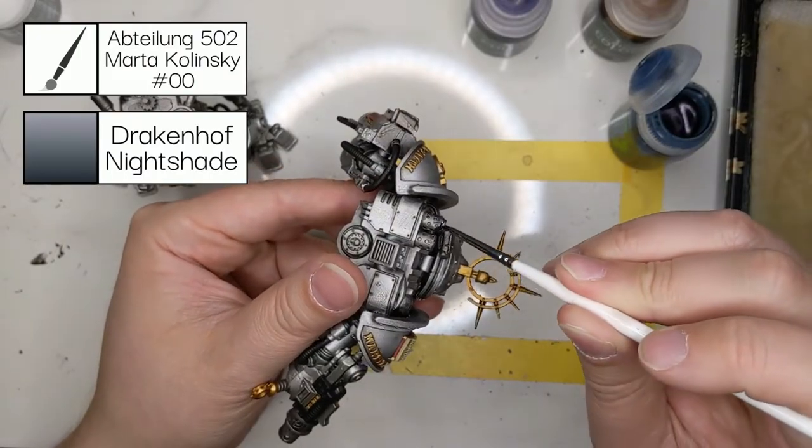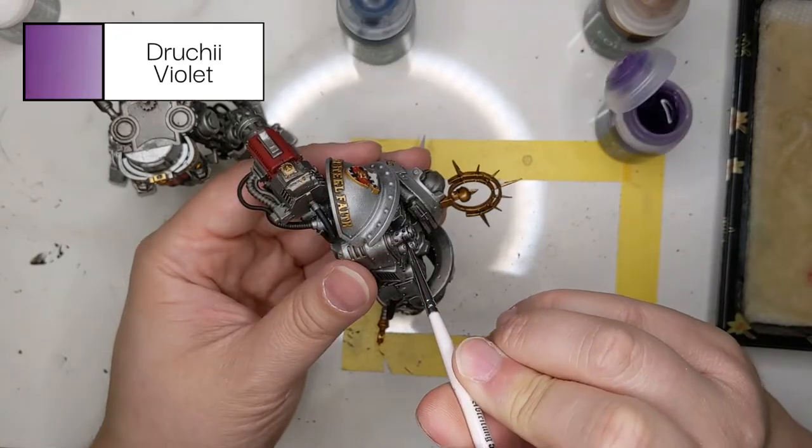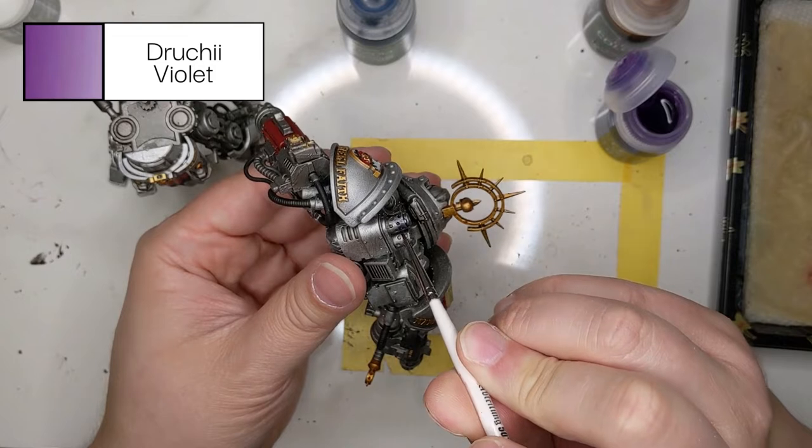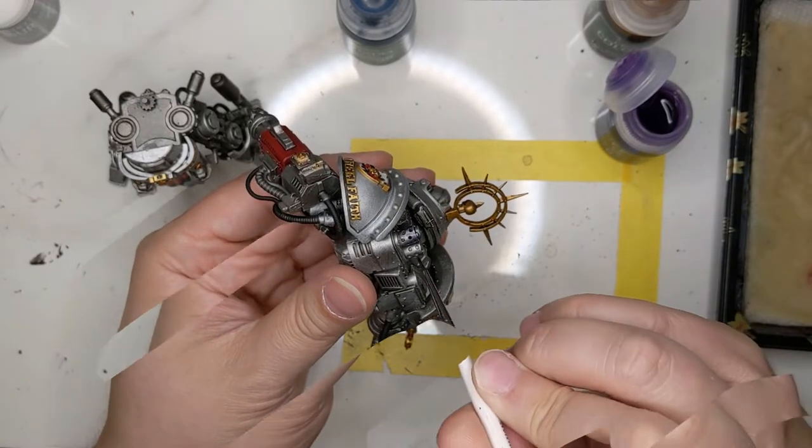We're using Drakenhof Nightshade, Drukhari Violet, and Seraphim Sepia on the exhaust system here to simulate the discoloration that comes from intense heat. You want to start at the top with Drakenhof Nightshade and go about halfway down.